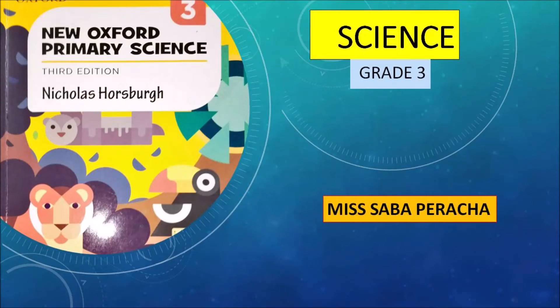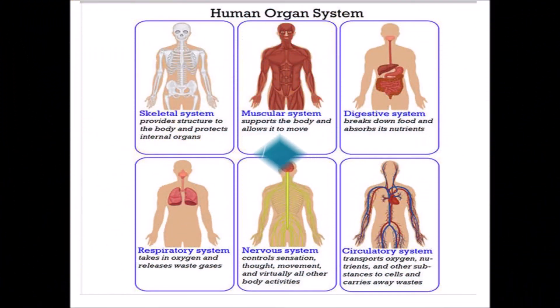Bismillah Rahman Rahim. Assalamu Alaikum, hope you all are doing well. This is lecture number two of unit number one: the human body. Today I am going to explain different organ systems working in our body. Organs along with other organs form organ systems. Similarly, bones along with joints form a skeletal system, and different types of muscles form the muscular system.